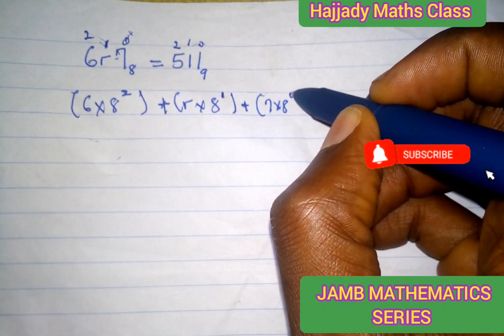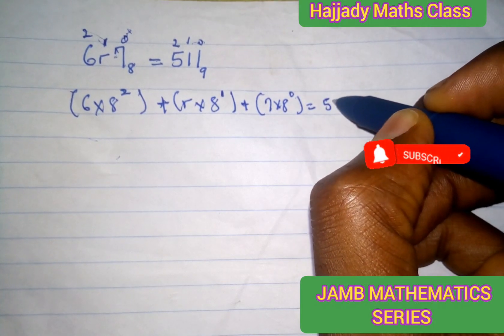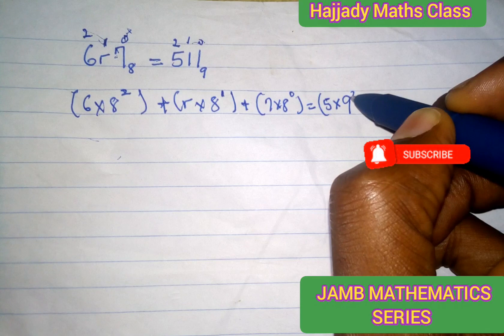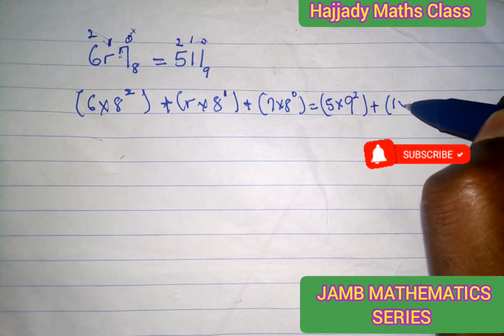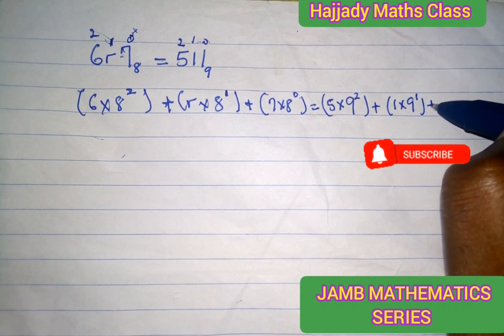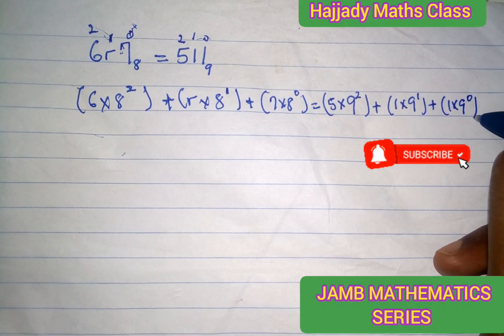This equals 5 times the base, which is 9 raised to the power of 2, plus 1 times the base, which is 9 raised to the power of 1, plus 1 times the base raised to the power of 0.